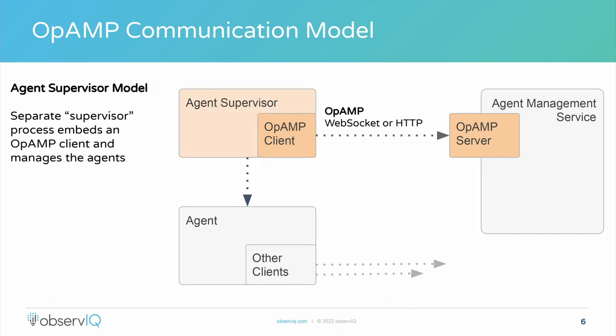The specification describes one other model. A common scenario is having an agent that's proprietary, or something where you don't want to open up the internals and embed a new library in it. In this case there's a separate supervisor process that acts as the OpAMP client and manages agents — whether they're proprietary, open source, or agents where you just don't want to change the internals. This allows for more flexibility, particularly with proprietary agents, and gives another model for this to operate.